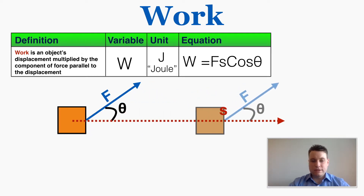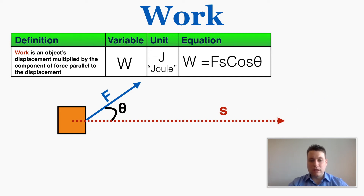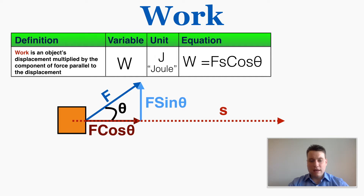Our definition says that work is equal to the component of the force that's parallel to the displacement multiplied by the displacement, and not all of that force is parallel to the displacement. So that force has two components — an x component and a y component — and only one of those components is parallel to the displacement, which is the force times the cosine: that's the x component in this case.